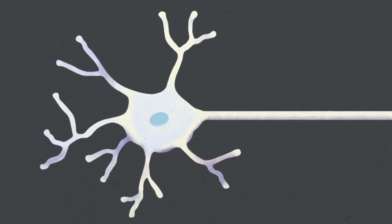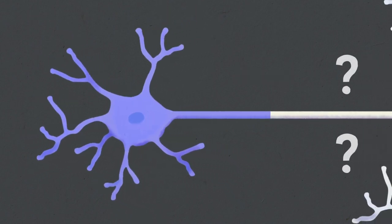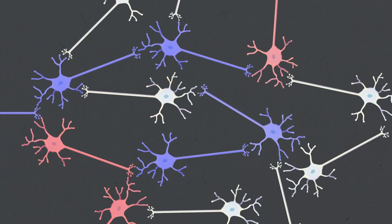One way to study the role of a specific neuron is to activate or inhibit the cell and then observe the consequences.